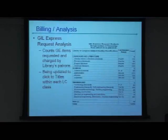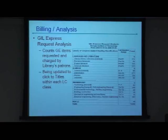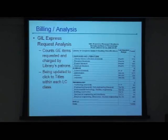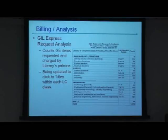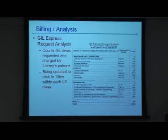We also did a usage analysis — not billing, but usage. This report goes out for a particular location and shows, by LC classification, the numbers of books that their patrons have gone out and borrowed from other colleges. They were all wanting to know what kind of books their patrons were borrowing from other colleges. I always thought it was kind of neat that Georgia Tech — Georgia Institute of Technology — is one of the biggest borrowers of math books in the system.